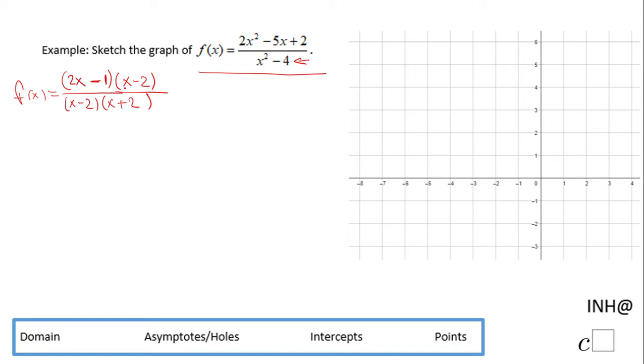If you notice now, these two cancel out, so the simplest form for this rational function is 2x minus 1 over x plus 2. Very important to do this step in this problem.